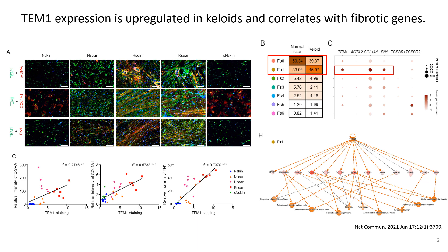So the analysis of published single-cell RNA sequencing datasets shows that the fibroblast subgroup cell proportion is increased in keloid with Thiamin, Caldesmon-1A1, and fibronectin gene expression. So IPA analysis infers that TGF-beta is an upstream factor that can drive the fibrosis-related pathway in this fibroblast subset.